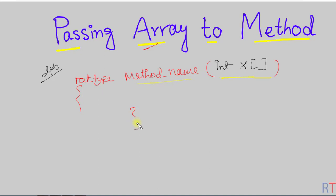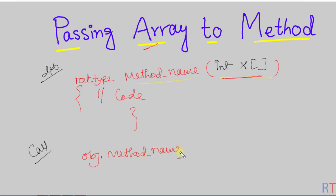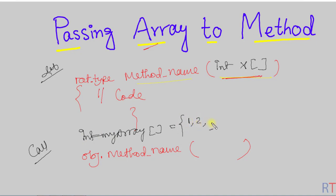Inside the curly braces we write code to perform some operation on that array. While calling the method, we use the object dot method name and inside the parentheses we pass the array name as the argument. For example, if we have an integer array called myArray with elements 1, 2, 3, 4, 5, we pass it by writing just the name myArray.